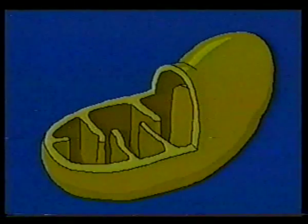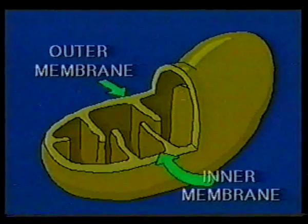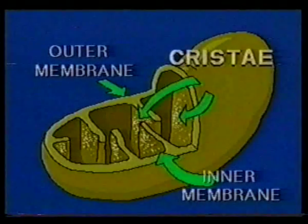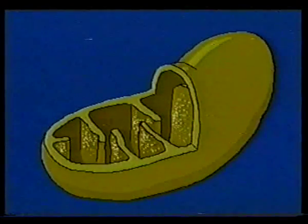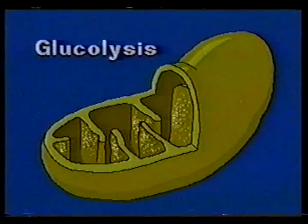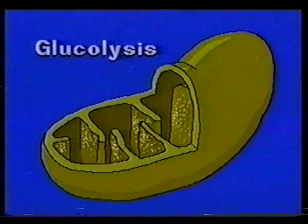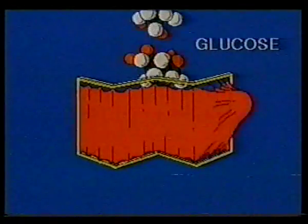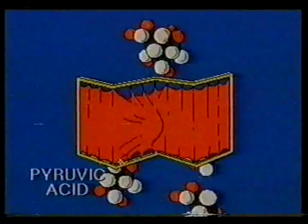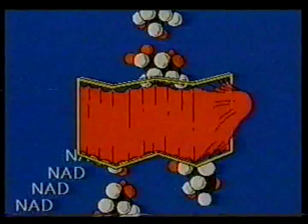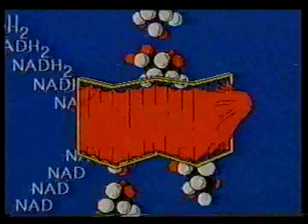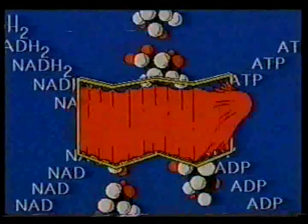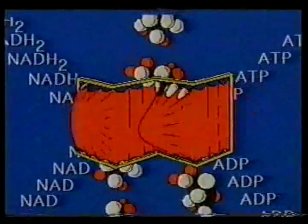The cell depends on the mitochondrion to extract the energy from glucose in a controlled way. The mitochondrion is shaped something like a peanut. It has two complete membranes — an outer and an inner — which is folded to create regions called cristae. In a process called glycolysis, the breakdown of glucose begins outside the mitochondria. In a series of steps, glucose is broken down into pyruvic acid. This reaction also transfers hydrogen to NAD molecules and produces two ATP molecules for every glucose molecule.